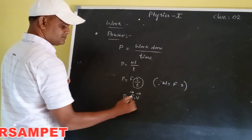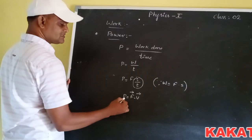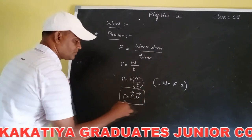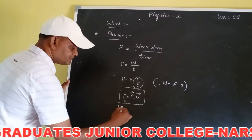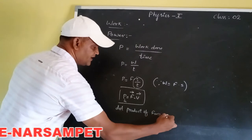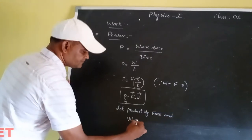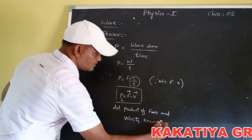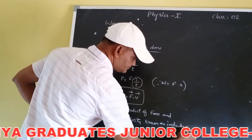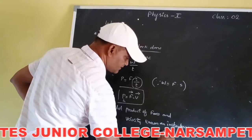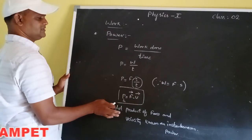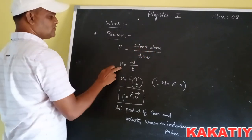More specifically, the dot product of force and velocity is known as instantaneous power. The dot product of force and velocity gives us instantaneous power. So: instantaneous power equals the dot product of force and velocity.